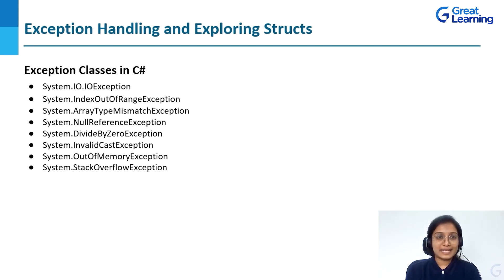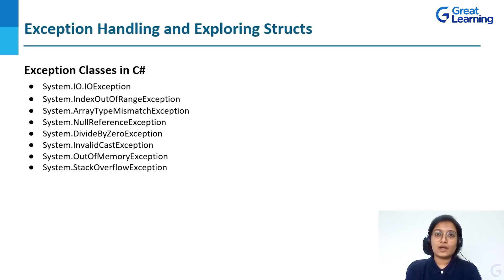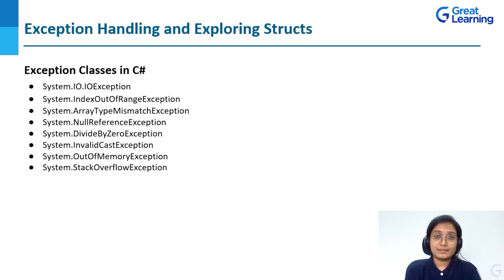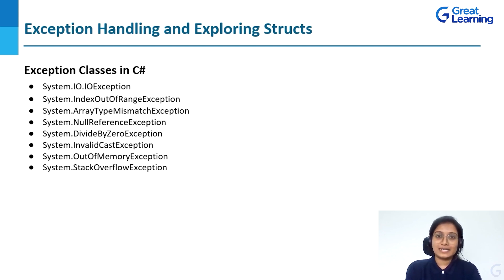Other exception types include null reference, where you are pointing to something with no value; divide by zero, where you try to divide a number by zero, which is impossible; invalid cast, where you cannot convert from one data type to another; out of memory, where you are trying to use memory that is already full or non-existent; and stack overflow, where a stack has a certain size and if you try to put in more elements than declared, it will overflow.